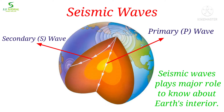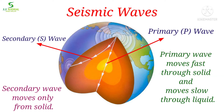But among all of them, seismic waves play a major role in knowing about earth's interior. Analyzing seismic waves — mainly primary waves and secondary waves — geoscientists are able to know most of the information about earth's interior. Primary waves move fast through solid and slow through liquid, but secondary waves move only through solid. That is how geoscientists divide earth's interior.